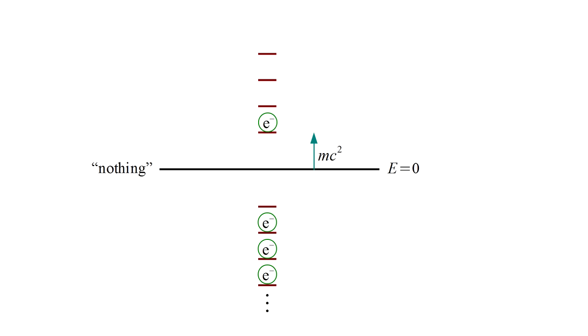Half of that energy, mc squared, would correspond to the mass m of the electron. The other mc squared would also correspond to a mass m.